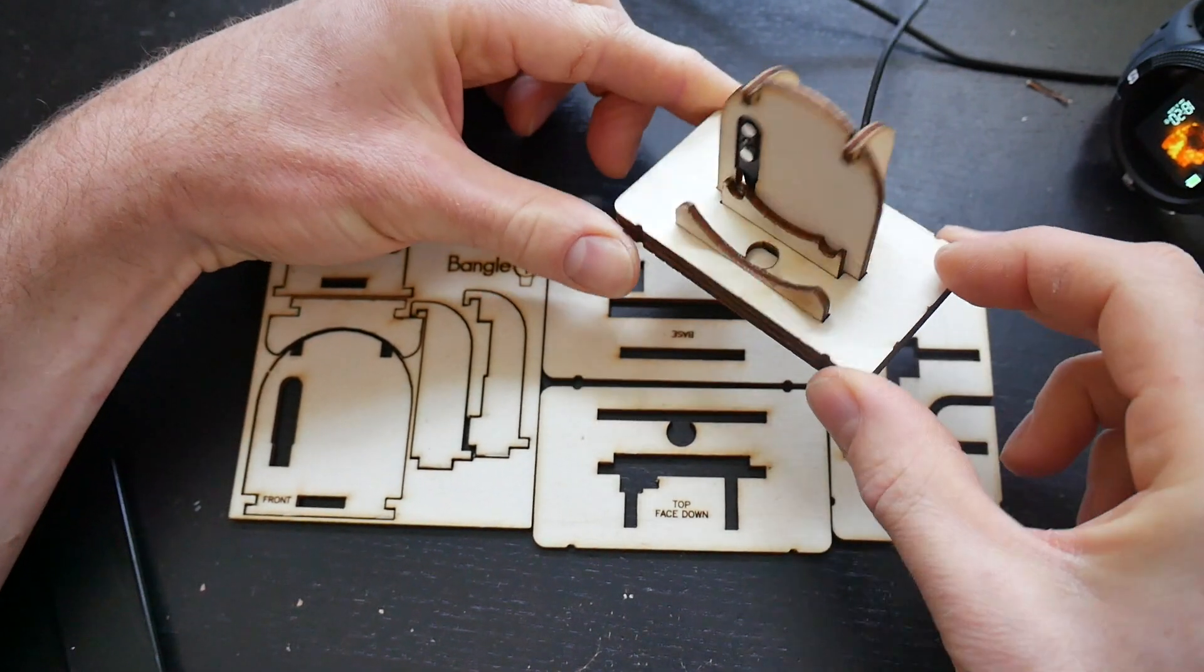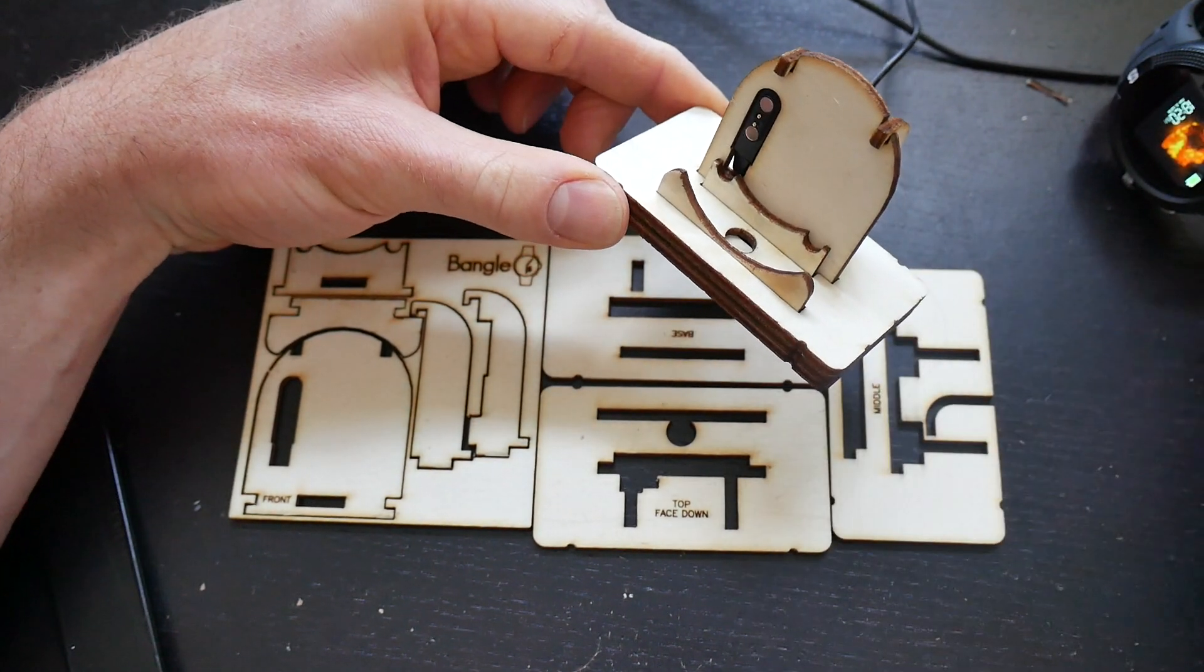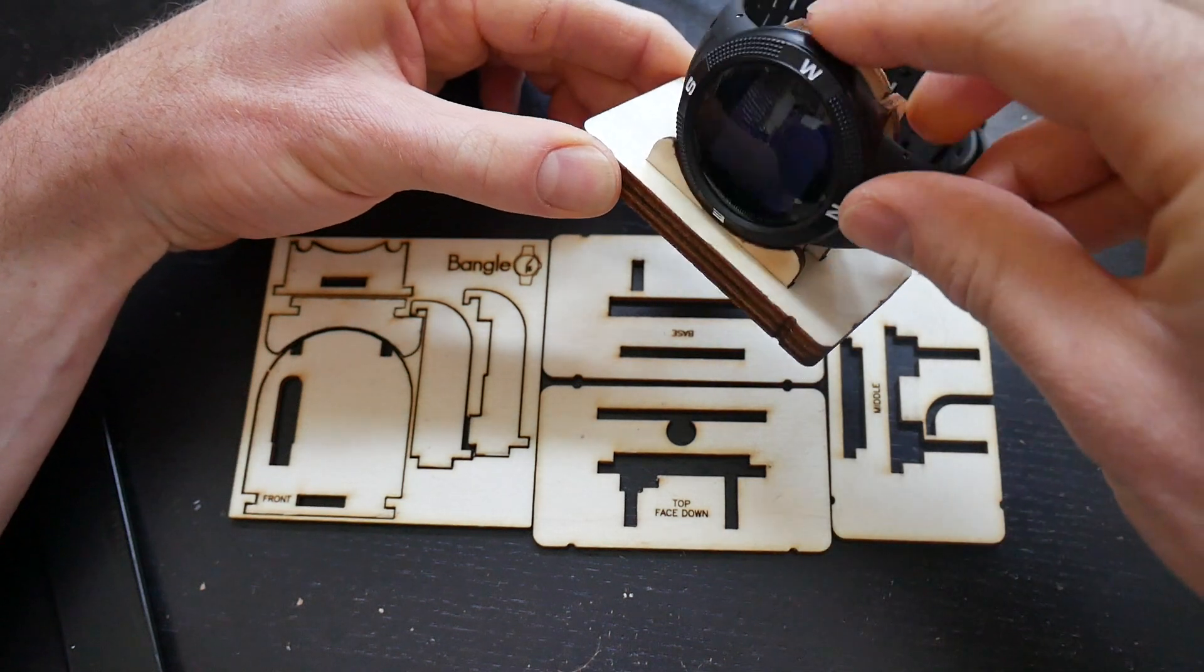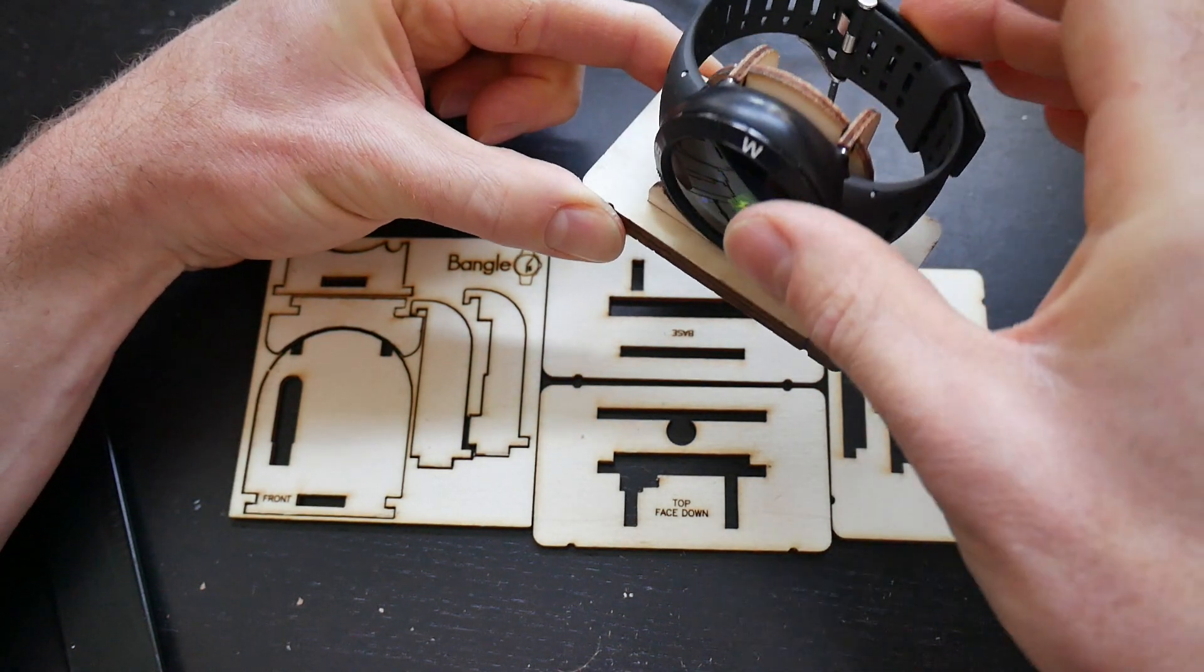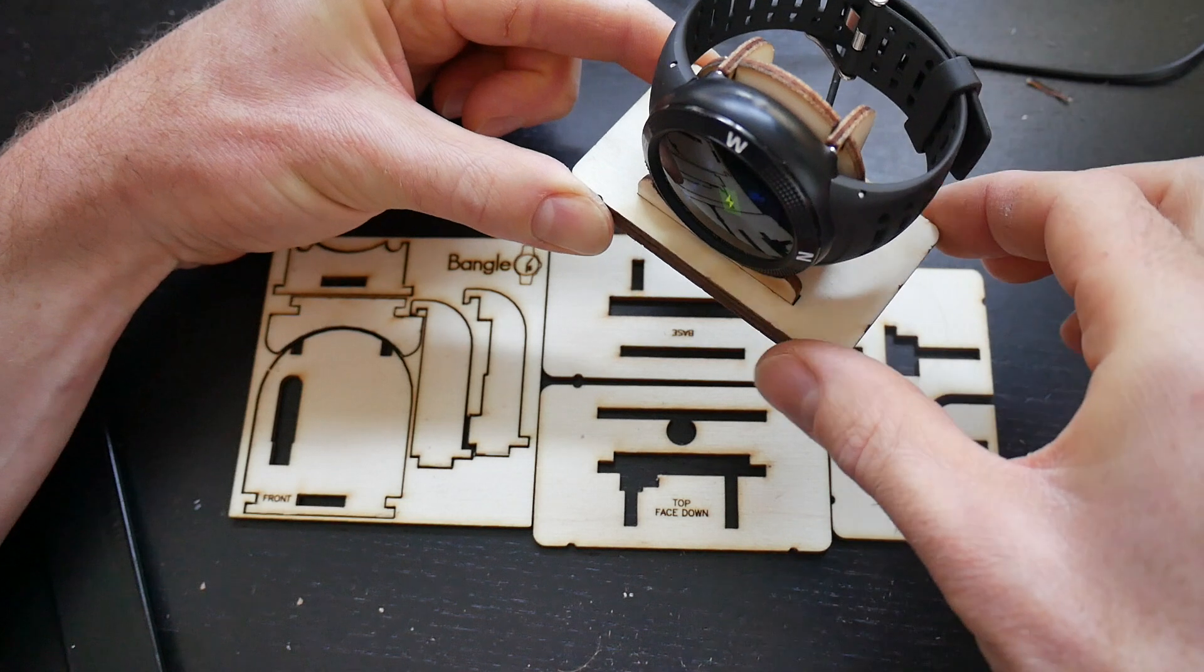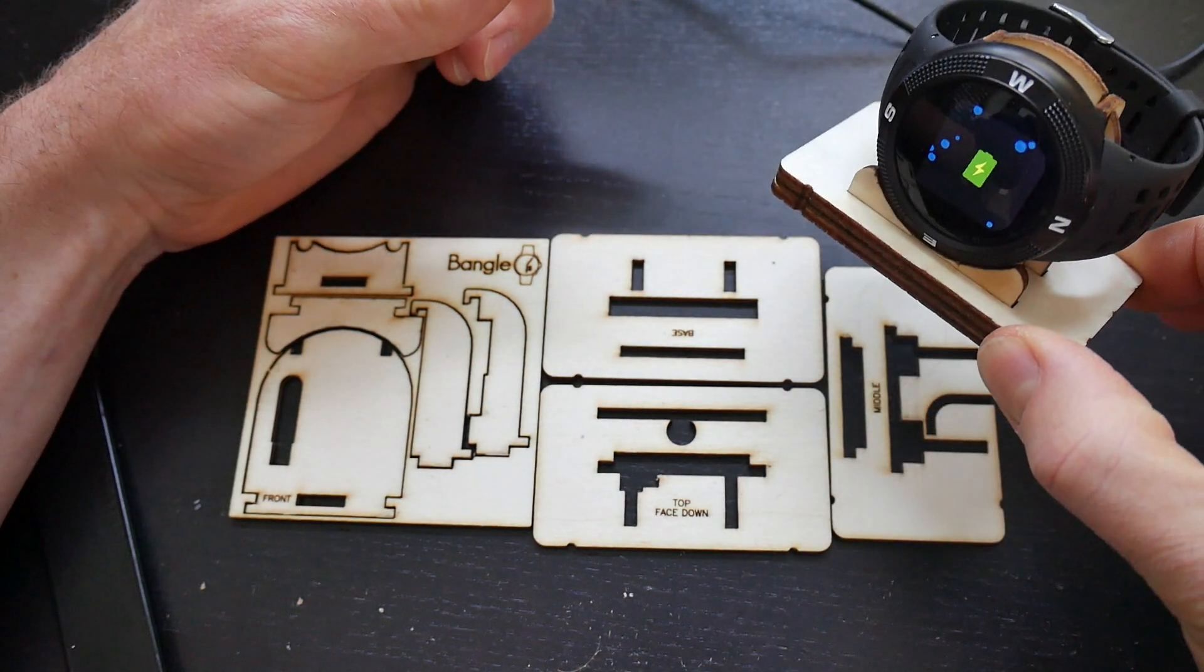Hi, I'm going to show you how to make a Bangle.js charge cradle like this. This allows you to take your Bangle.js and just slot it on and have it charging really easily, and it also provides a nice secure place for it to sit when you're not using it.